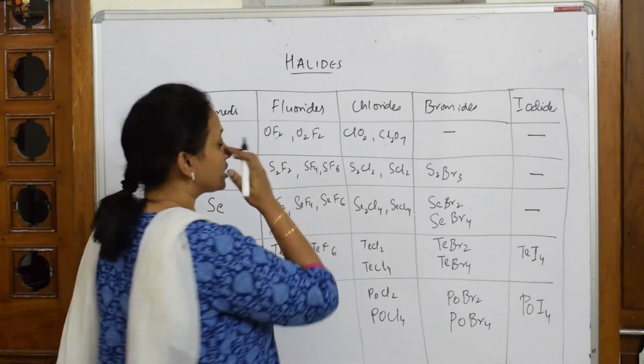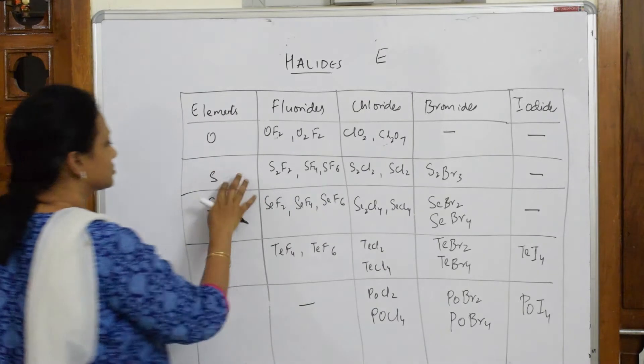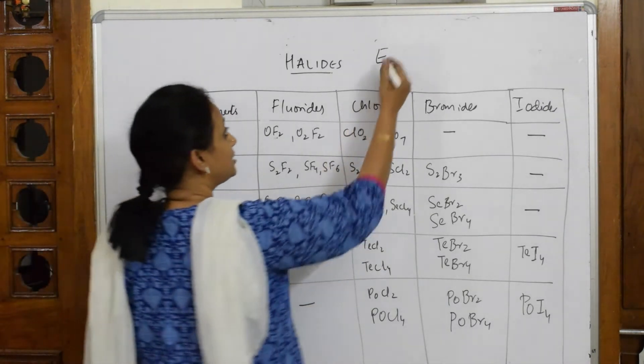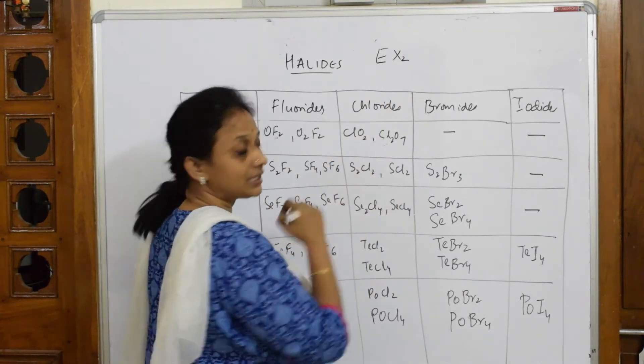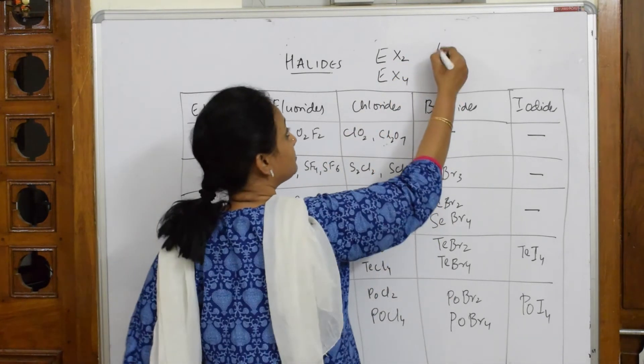Your group 16 elements are going to form halides of type E. E stands for the element oxygen, sulfur, selenium, tellurium, and polonium, and the halide of type EX2, halide of type EX4, halide of type EX6. So these are the types of halides which they're going to form.